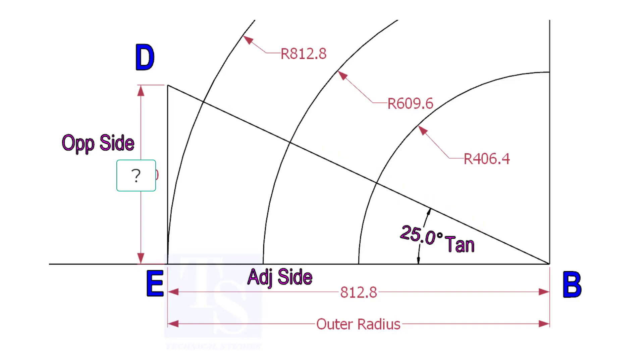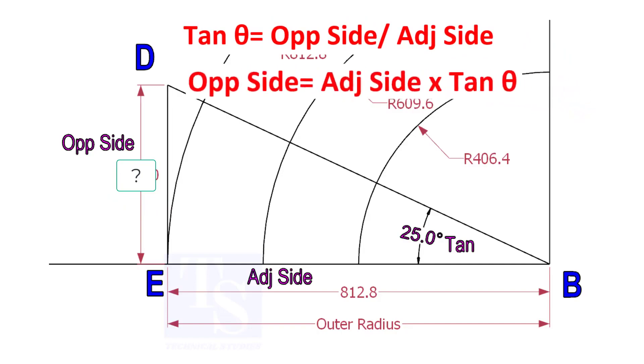To draw the line DB, we need to know the length of the line ED. To calculate ED, we need to apply the formula: tan theta equals opposite side divided by adjacent side. Opposite side equals adjacent side multiplied by tan theta.